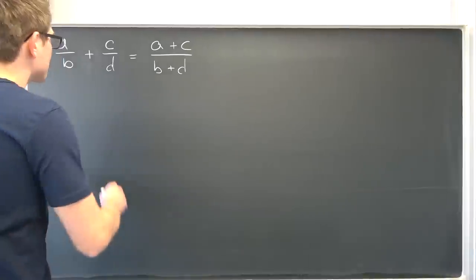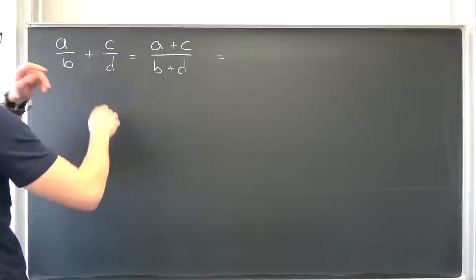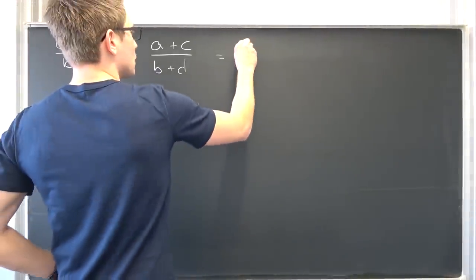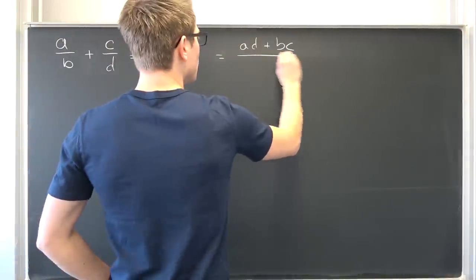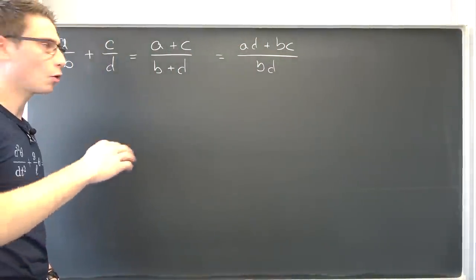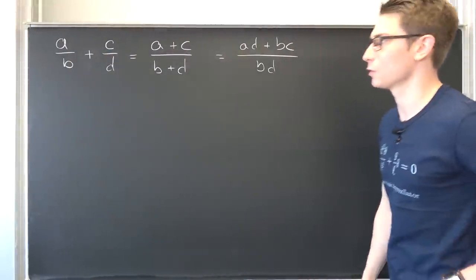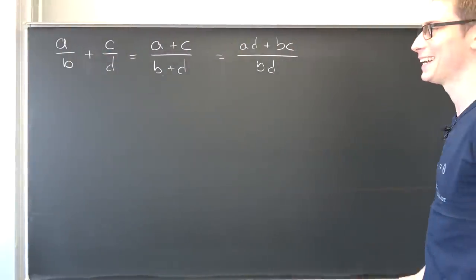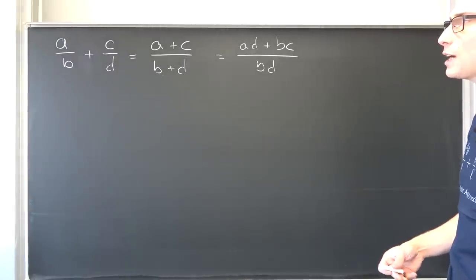At first it would make sense to actually compute this left hand side. So just finding the common denominator, we are going to have ad plus bc over b times d. One restriction we already need to have is that b and d, either of those can't be equal to zero. Otherwise we would run into some very tiny problems.